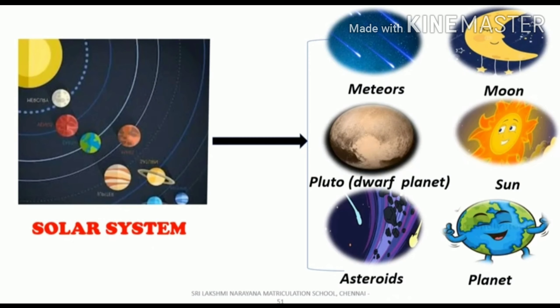Next is our solar system. So what does our solar system consist of? Our solar system consists of meteors, moon, dwarf planet Pluto, sun, asteroids and some other planets.